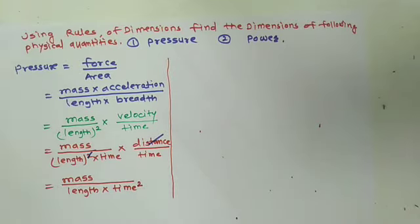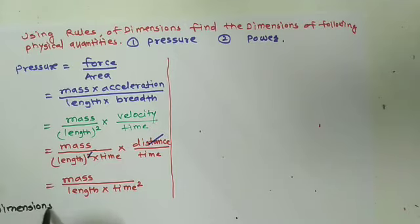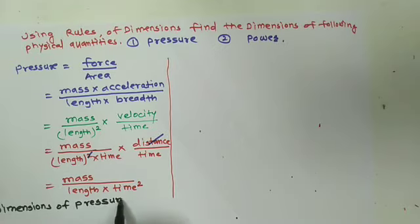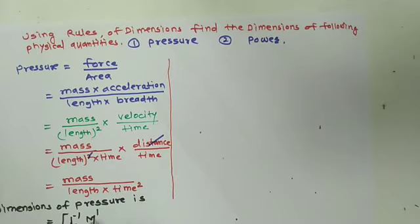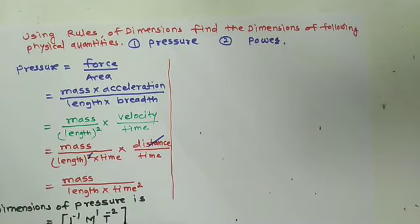So the dimension of pressure is: square bracket L raised to minus 1, M raised to 1, T raised to minus 2, close square bracket. That is the dimension for pressure.